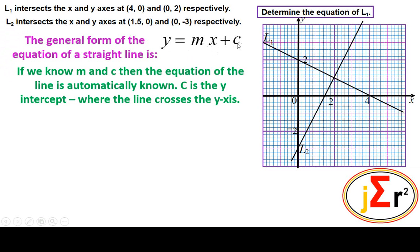C is where the line crosses the y-axis. The line L1 crosses the y-axis and the value there is y equals 2, and we substitute that in the place of c.